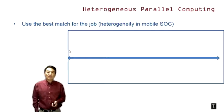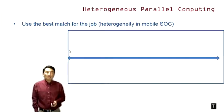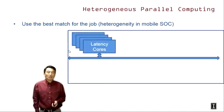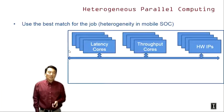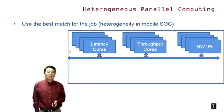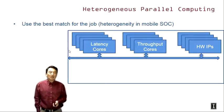This slide shows a typical system on the chip, or SOC, for mobile phones today. In a typical mobile phone, we expect to see between 2 and 4 CPU cores or latency cores, and we also expect to see 2 to 4 throughput-oriented cores or GPU cores. There has been a lot of hardware intellectual property blocks, or hardware IP blocks, that are used for video decoding, sound processing, and so on, and these IP blocks are becoming more and more programmable as well.